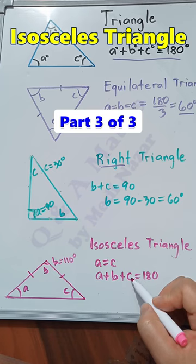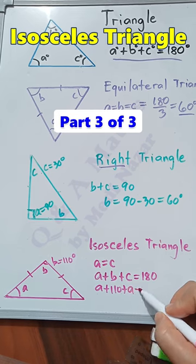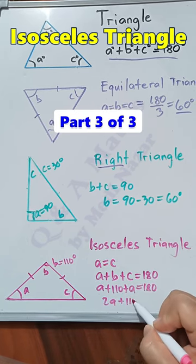In this equation, we can change C to letter A because they are equal. We have A plus 110 plus A equals 180 degrees. Then we'll have 2A plus 110 equals 180.